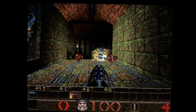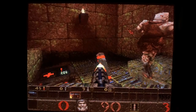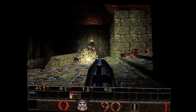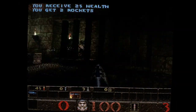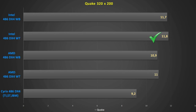Last but not least is Quake. It's not really playable on a 486, but it's useful as a benchmark since it heavily uses the floating point unit. Surprisingly, the Intel with write-through cache won with 11.8 FPS, with the second Intel very close behind. AMD write-through took third place, and notably AMD write-back is 0.1 FPS behind that — a consistent result across multiple test runs. For DOOM and Quake, write-back cache shows no significant advantage over write-through. Cyrix finished last at 9.2 FPS.